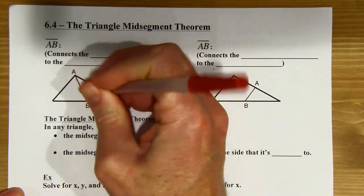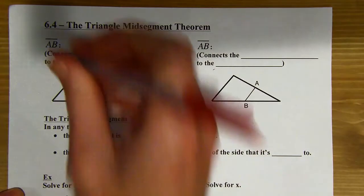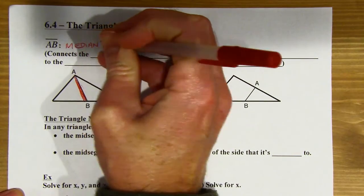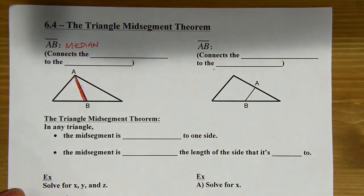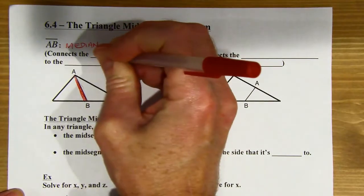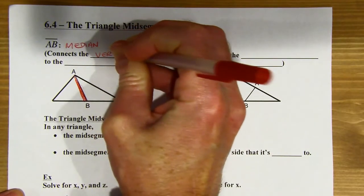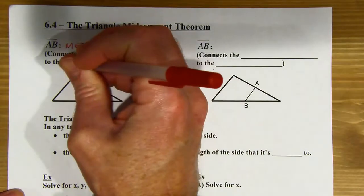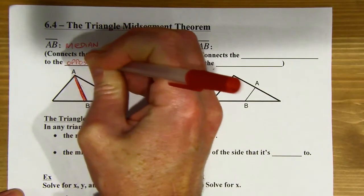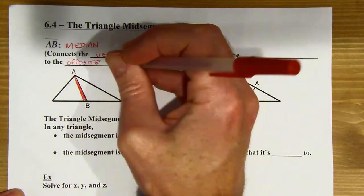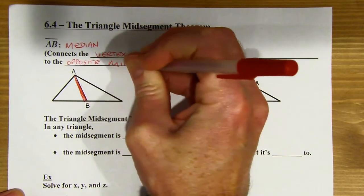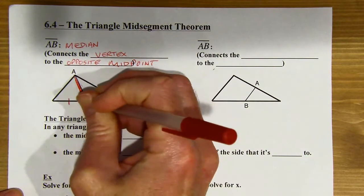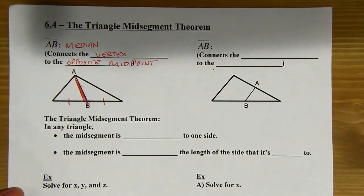On this first diagram here, segment AB right there is the median of this triangle. This connects a vertex — it could be any vertex — to the opposite midpoint. Point B there would have to be a midpoint. So that's a median.